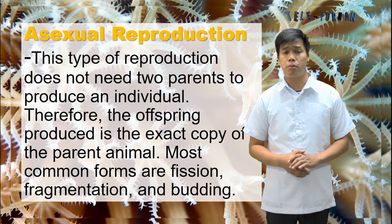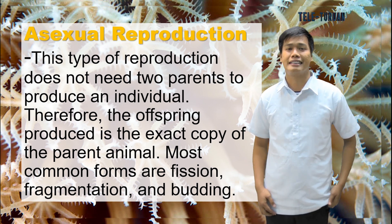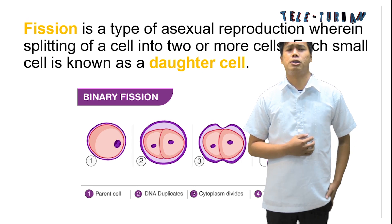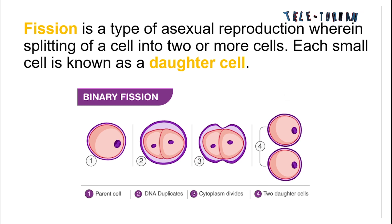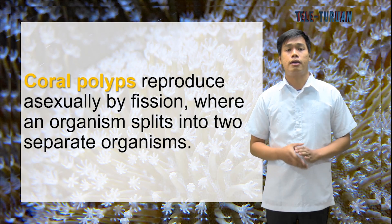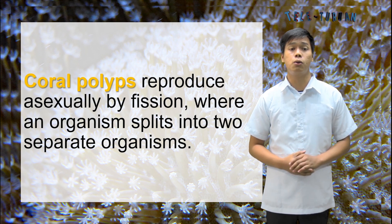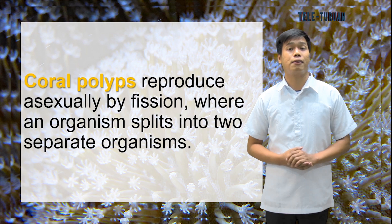The most common forms are fission, fragmentation, and budding. What is fission? Fission is a type of asexual reproduction wherein the splitting of cells into two or more cells occurs, and each small cell is known as a daughter cell. Coral polyps reproduce asexually by fission, where an organism splits into two separate organisms.